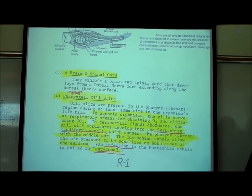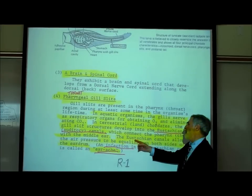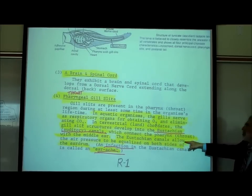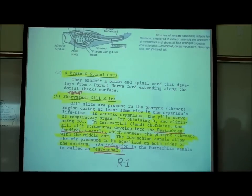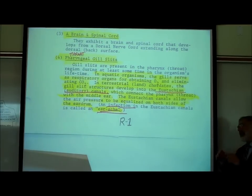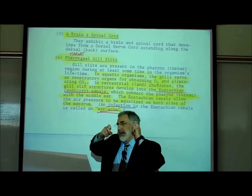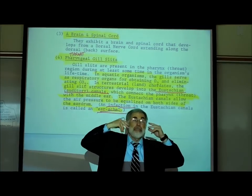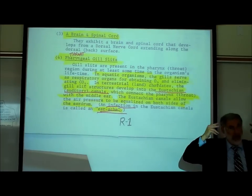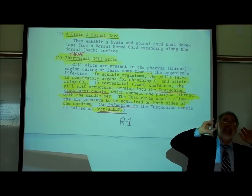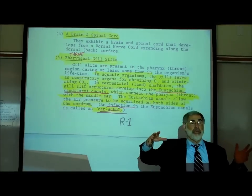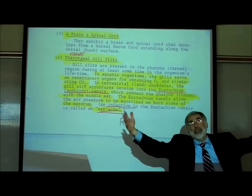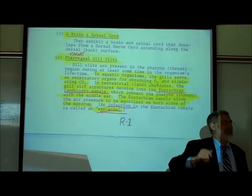The eustachian canals, or auditory tubes, connect your throat — your pharynx — with your middle ear. The eustachian canals allow the air pressure to be equalized on both sides of your eardrum. If the air pressure in your middle ear isn't the same as on the outside of your body, you'll experience a popping sensation.